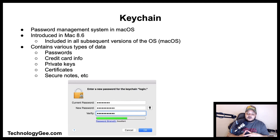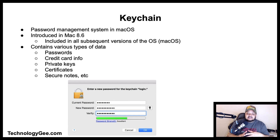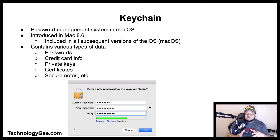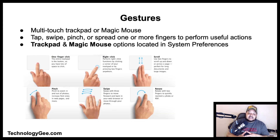Keychain is the password management system in macOS developed by Apple. It was introduced with Mac OS 8.6 and has been included in all subsequent versions. A keychain can contain various types of data such as passwords for websites, FTP servers, SSH accounts, network shares, wireless network information, groupware apps, encrypted disk images, credit card information, private keys, certificates, and secure notes.